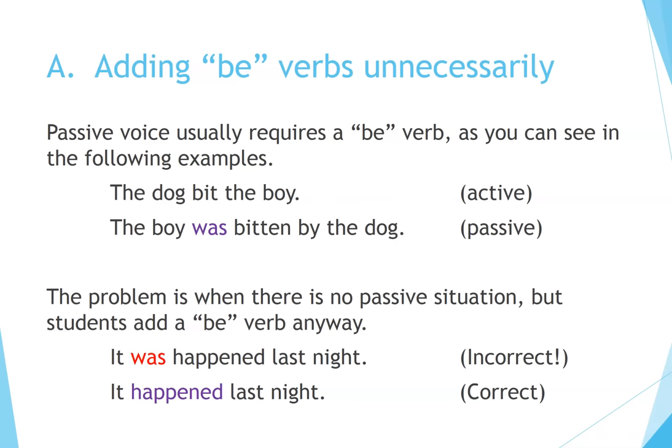A. Adding B verbs unnecessarily. Passive voice usually requires a B verb, as you can see in the following examples: 'The dog bit the boy' (active). 'The boy was bitten by the dog' (passive). The problem is when there is no passive situation but students add a B verb anyway. For example: 'It was happened last night' — incorrect. 'It happened last night' — correct.